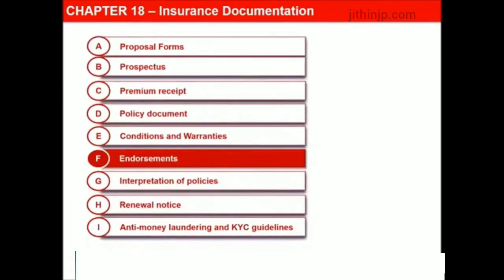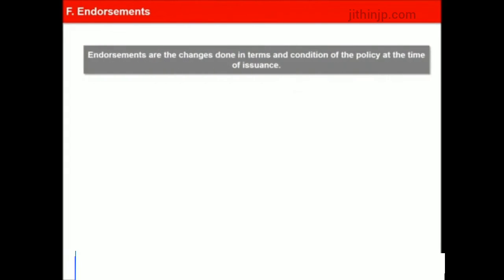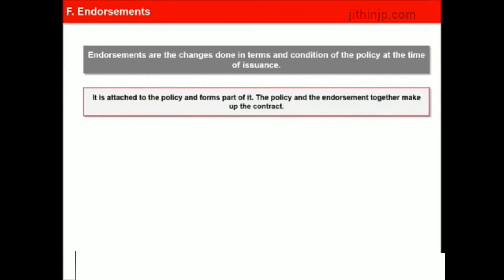If certain terms and conditions of the policy need to be changed at the time of issuance, it is done by setting out the amendments or changes through a document called an endorsement. It is attached to the policy and forms part of it. The policy and the endorsement together make up the contract. Endorsements may also be issued during the currency of the policy to record changes or amendments. Whenever material information changes, the insured has to advise the insurance company, who will incorporate the same as part of the insurance contract through the endorsement.